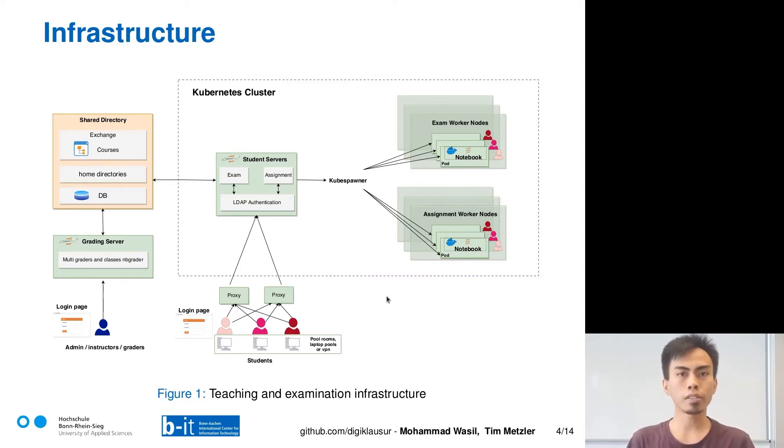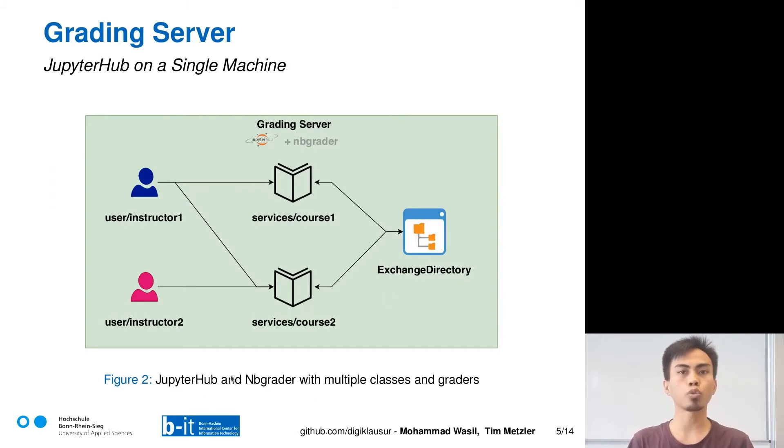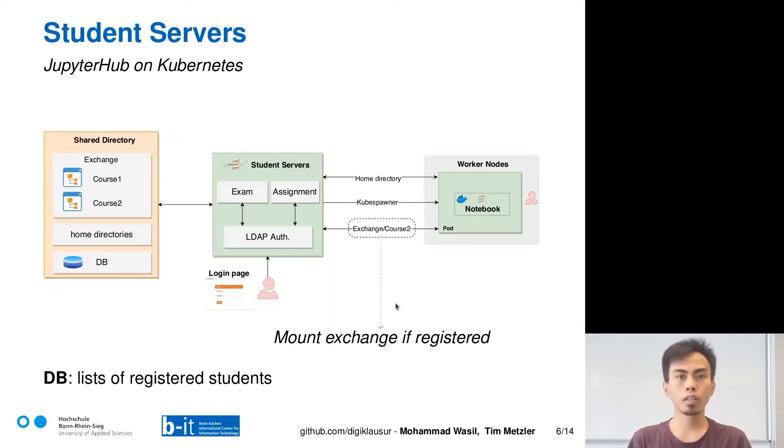On the grading server, instructors can have access to multiple courses via Jupyter Hub services. The assignments are then released to an exchange directory. Here, on the student servers, we mount the release assignments, home directories, and database. This mounting process happens via Jupyter Hub spawner hook. The database is nothing but lists of registered students which we get from examination services. The most important part here is that we only mount courses if they are registered.